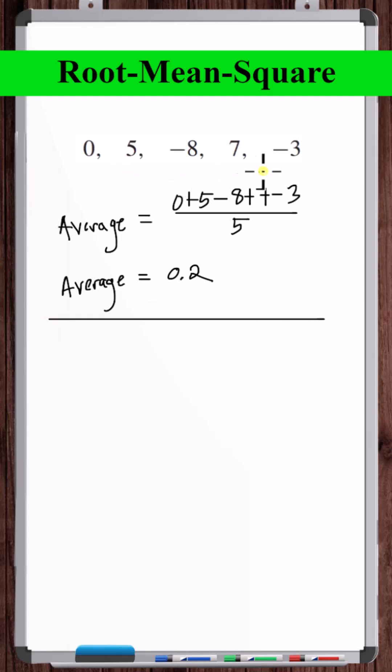We could think about ignoring any negative signs and taking the average. This seems like it might work pretty well.